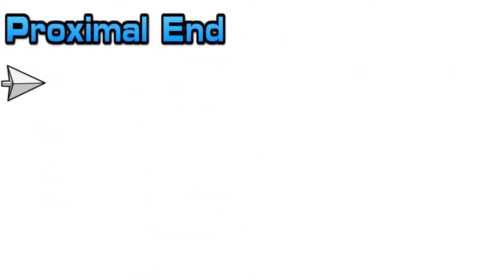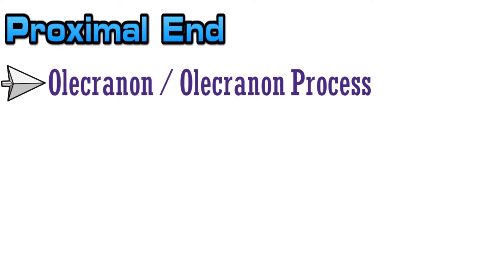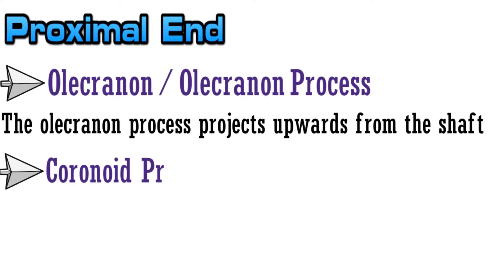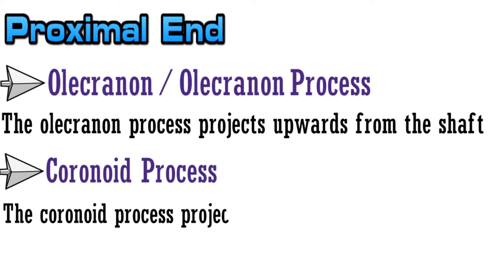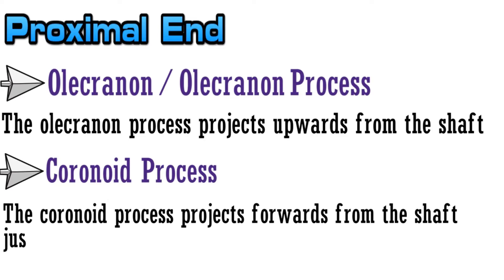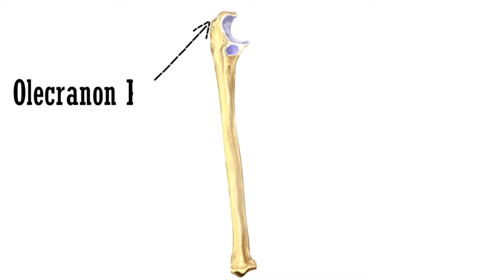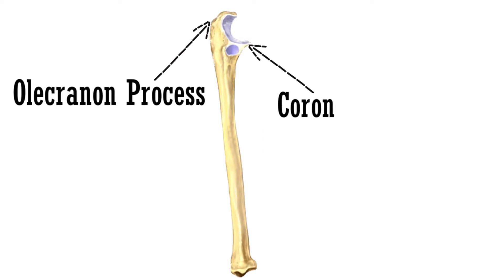Taking the proximal end first — the first structure is the olecranon process. The olecranon process projects upwards from the shaft. The next structure is the coronoid process, which projects forwards from the shaft, just below the olecranon process. This upward projecting process is the olecranon, and this forward projecting process is the coronoid process.